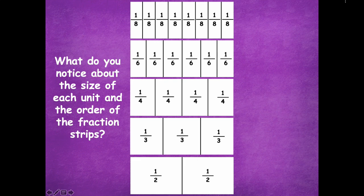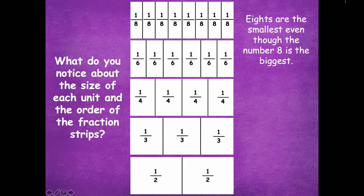So what do you notice about the size of each unit and the order of the fraction strips? So eighths are the smallest even though the number eight is the biggest. So just don't always go by the size of the number to determine whether that's the correct size of the fraction. Okay, so oftentimes, the more units, the smaller each unit will be. Okay, so there's eight units in that top one, but they have to be smaller to share those same spaces, that same total or whole, I should say.